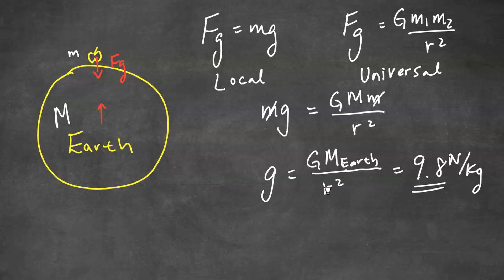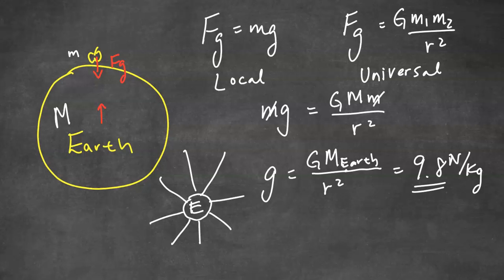Notice that R is the radius of the Earth — really the distance from the center of the Earth to the center of the apple. As the apple goes higher into space, R gets bigger and little g gets smaller. We can represent this with gravitational field lines: close to Earth the lines are packed tightly, indicating a strong gravitational field, and as you move further away the lines spread apart, indicating a weaker field.